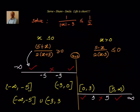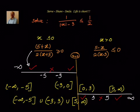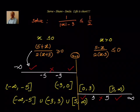The boundaries minus 3 and 3 are excluded since the function is not defined there. Combining everything, the final solution is: minus infinity to minus 5, union minus 3 to 3 (boundaries excluded), union 5 to infinity (5 included, infinity excluded). The excluded windows are between minus 5 and minus 3, and between 3 and 5, where the respective conditions are not satisfied.